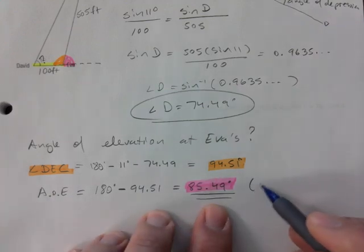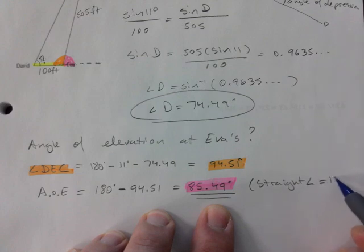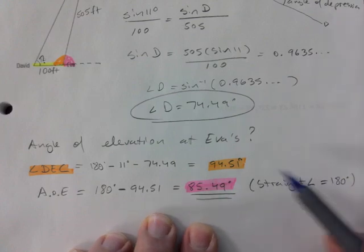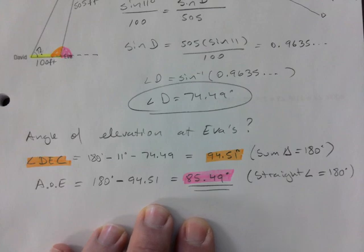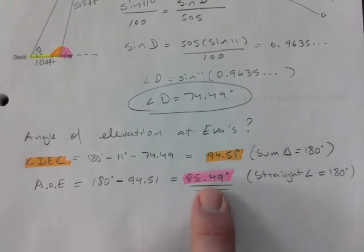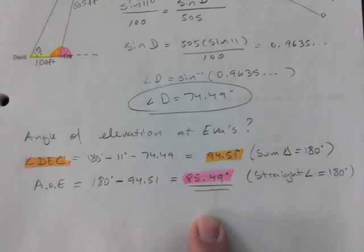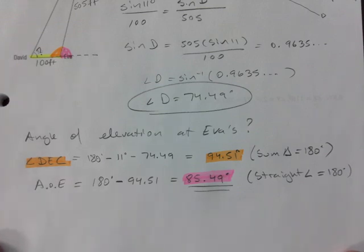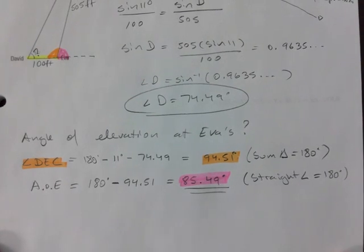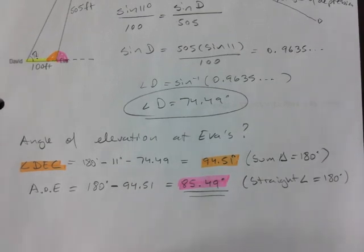I'm going to put this down as straight angle. This one we use sum of triangle to get the right angle. If you want to justify, we use sum of triangle to first find the one that was next to the one we were interested in, and so these are supplementary. All right, putting sine law on hold for a bit, just for a bit, but it's coming back. I'm going to stop this video here.